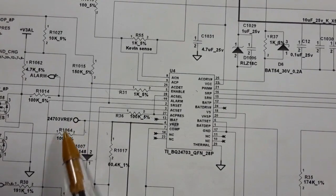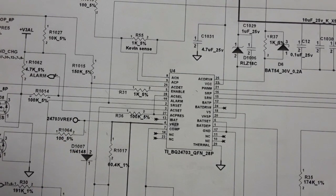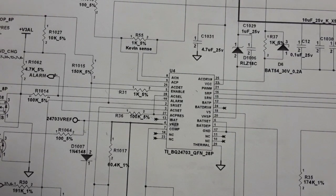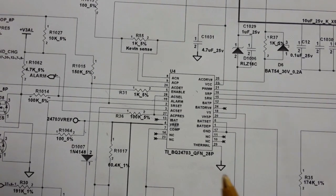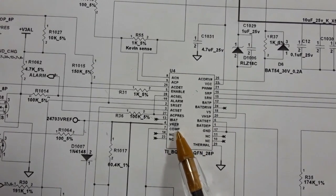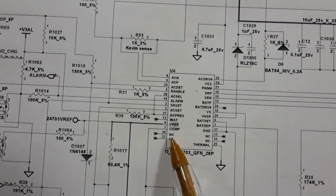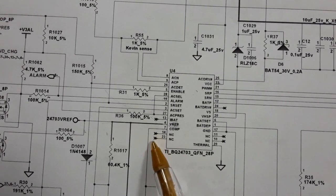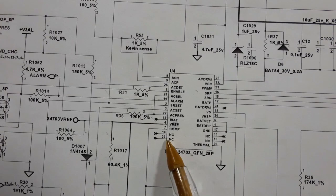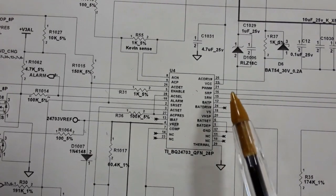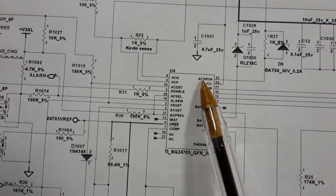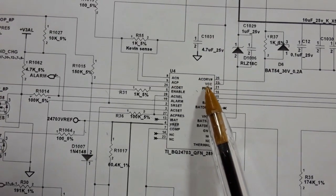Here we have VREF — the reference voltage. Every IC needs a reference voltage as one of its inputs, which it uses as a base to generate other voltages. Here we have COMP, and NC which means not connected. When you see this symbol it always means not connected.